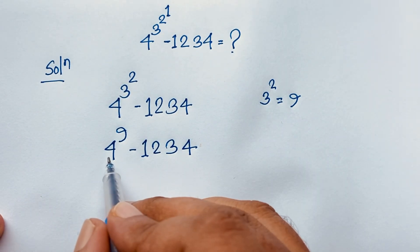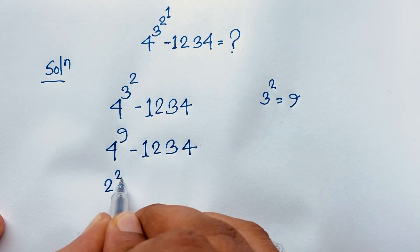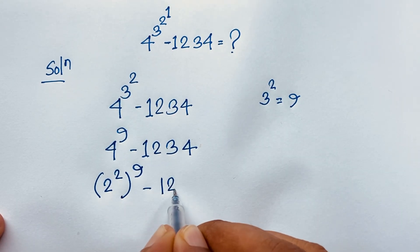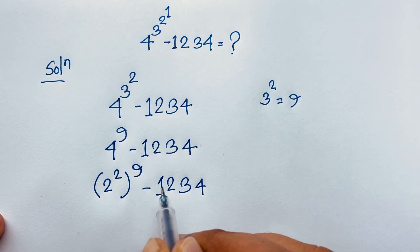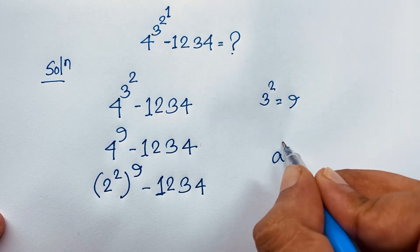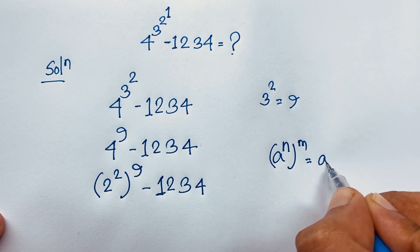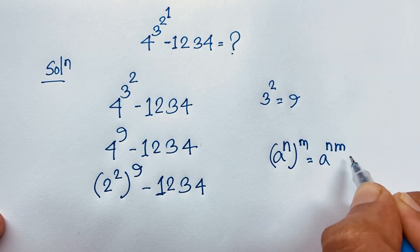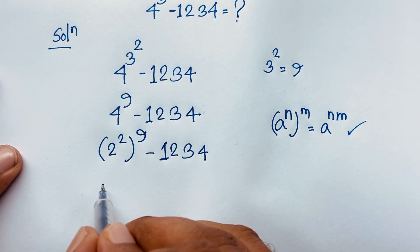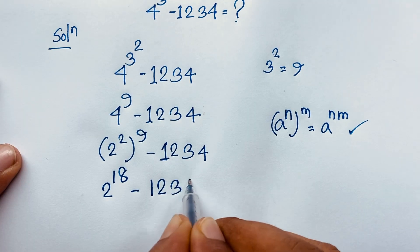Then here, 4 — we know that 4 equals 2 to the power 2, bracket, to the power 9, minus 1234. Now, if I apply this math formula — a to the power n, bracket, to the power m, equals a to the power n times m — so 2 times 9 equals 18. This gives us 2 to the power 18, minus 1234.